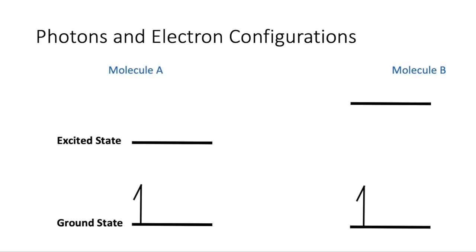So you can see that molecule A, there's a shorter distance in energy, a smaller energy gap between the ground state and the excited state than there is in molecule B. So we expect that molecule B would require more energy to get from the ground state to the excited state. And in terms of wavelength, energy and wavelength are inversely related, so the longer wavelength would be for molecule A.